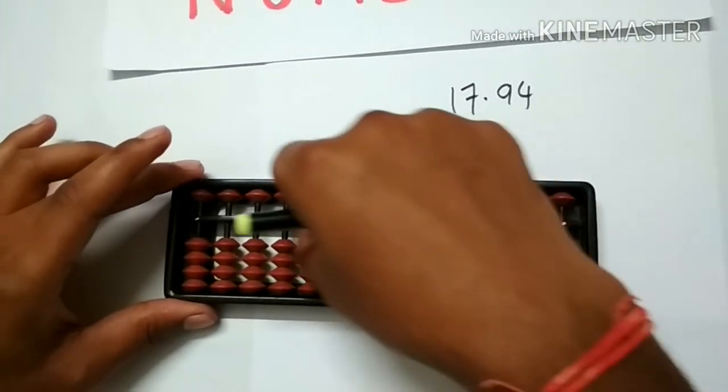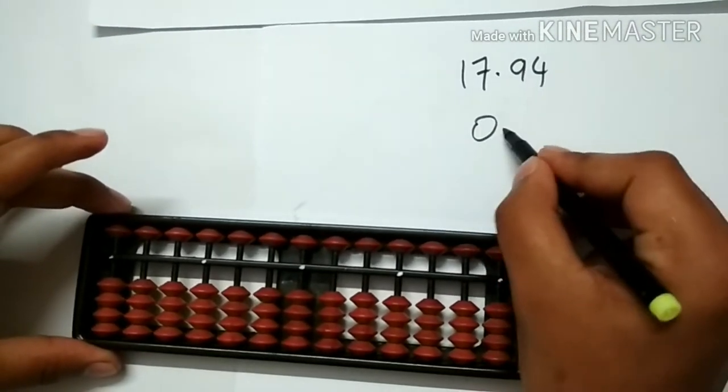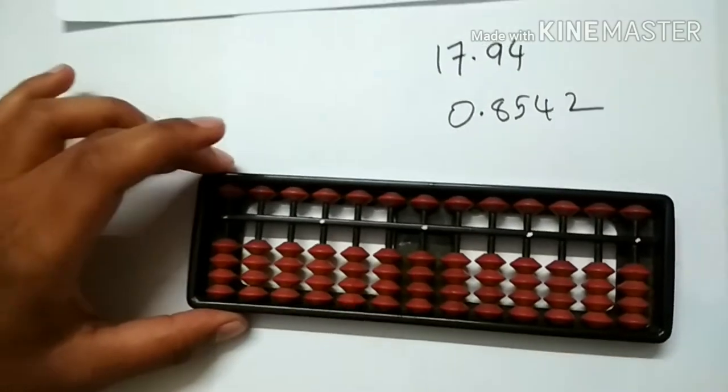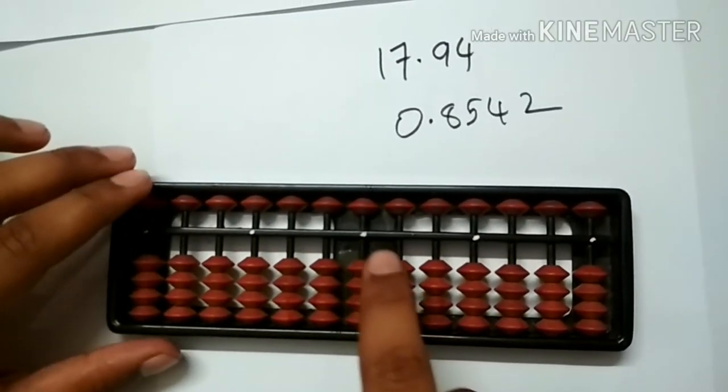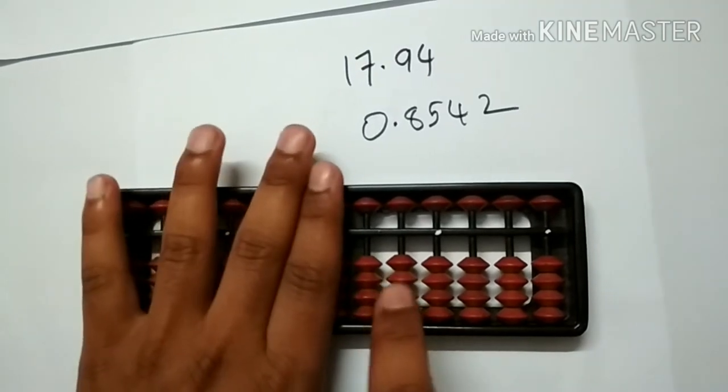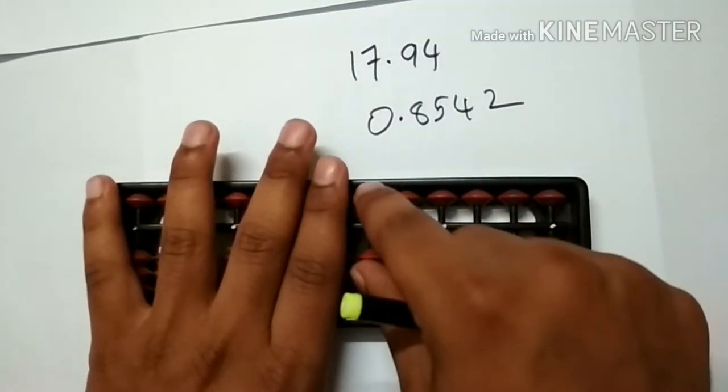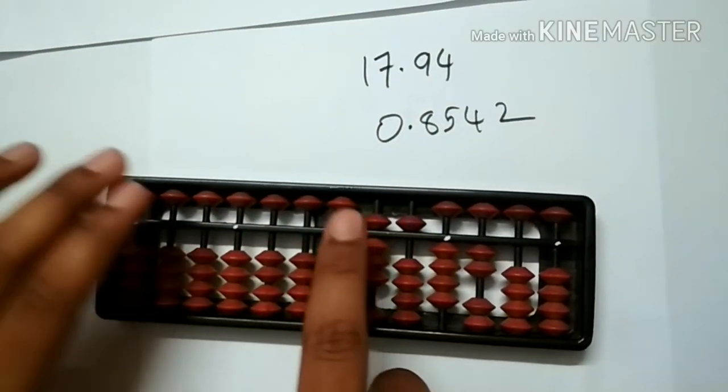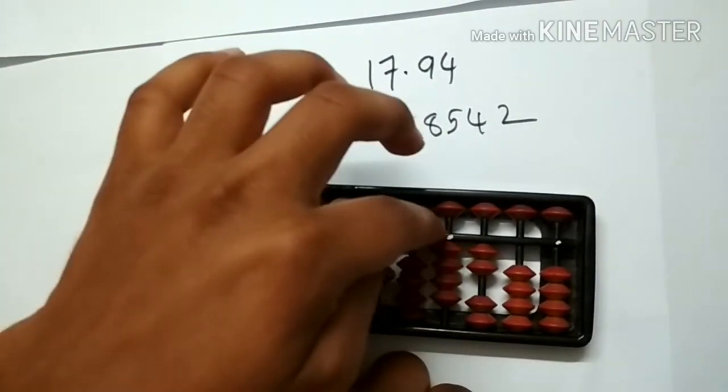Let us take another example. To place 0.8542: now we have 0, 0 means nothing on the left of the units rod. So we have nothing on the left of the units rod and we have to place 8542. This is 0.8542.